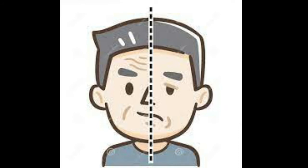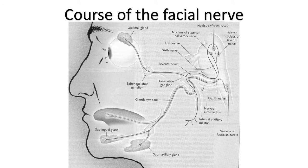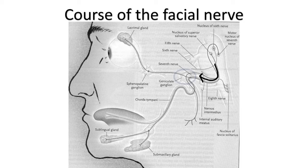Before we learn about facial palsy, let's have a brief look at the path of the facial nerve, also known as the course of the facial nerve. The facial nerve begins from the facial nucleus. The nerve first travels around the nucleus of the sixth cranial nerve, i.e. the abducent nerve. Afterwards, the facial nerve travels with the auditory nerve in the internal auditory canal and enters the facial canal, where it soon reaches the geniculate ganglion containing the neuronal cell bodies for taste and ear sensation.